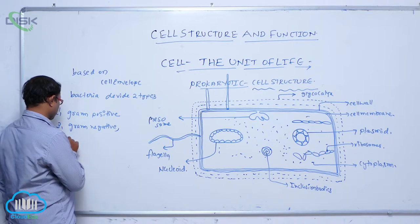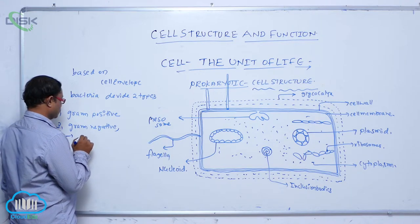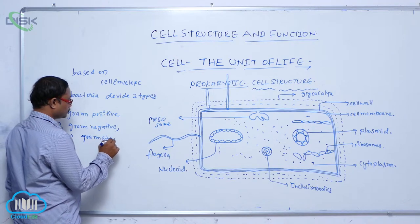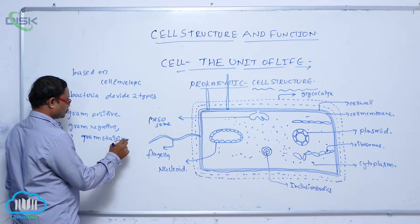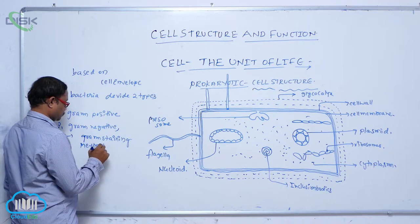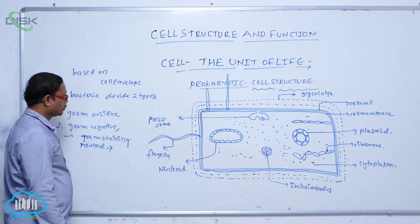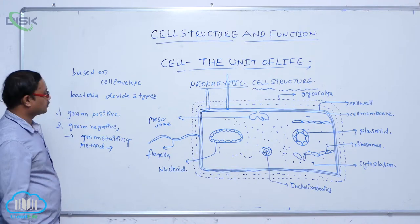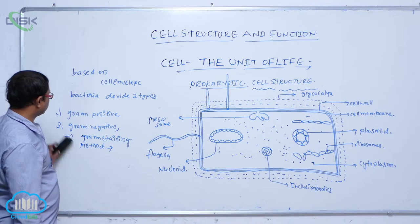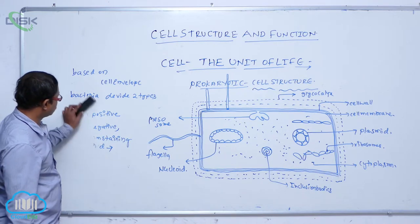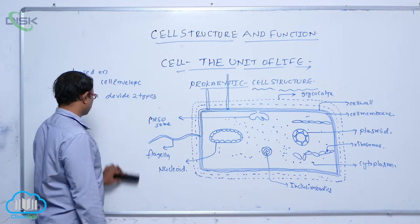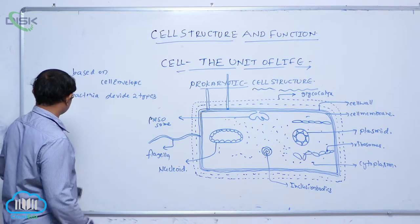Bacteria are identified based on the gram staining method. It is a cell envelope targeted staining purpose. Based on the staining, they are divided into gram positive and gram negative. So, what is the gram staining method?